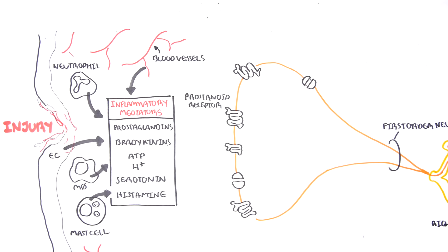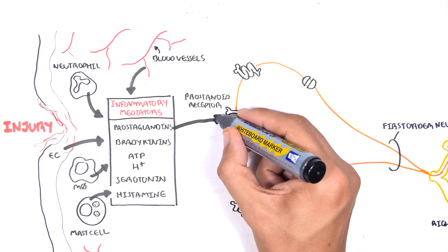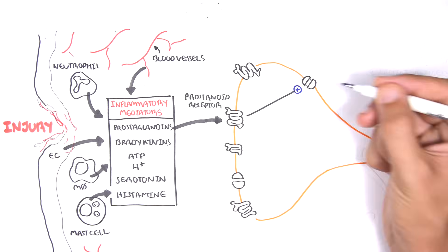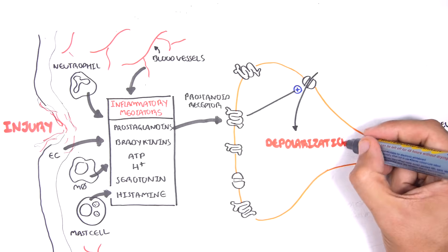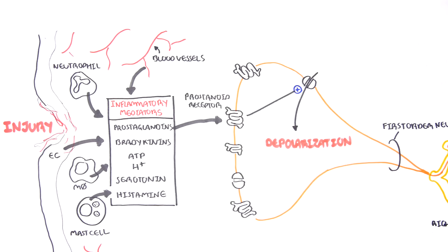Prostaglandins, for example, will bind onto what's called prostanoid receptors, causing a depolarization of the neuron, thus stimulating this first order neuron. Bradykinin will bind onto what's called a B2 receptor, causing depolarization and stimulating the first order neuron. The other mediators will also stimulate the first order neuron through other mechanisms and receptors.